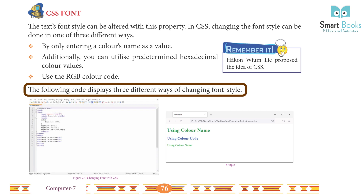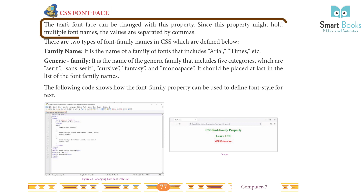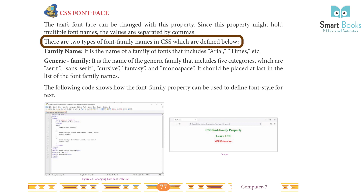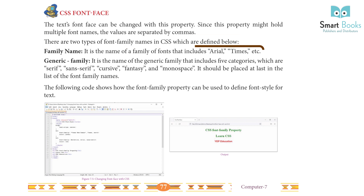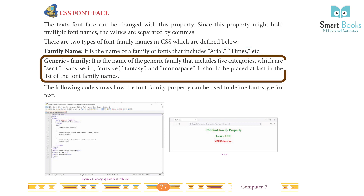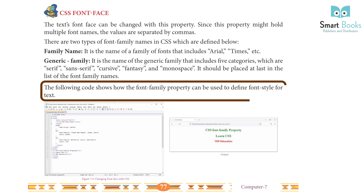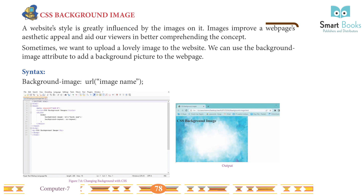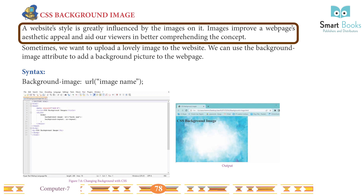CSS font face: the text font face can be changed with this property. Since this property might hold multiple font names, the values are separated by commas. There are two types of font family names in CSS: the font family name, which is the name of a specific family of fonts such as Arial, Times, etc., and the generic family, which includes five categories: serif, sans-serif, cursive, fantasy, and monospace. The generic family should be placed last in the list of font family names.